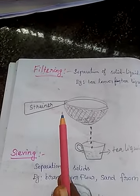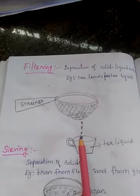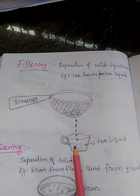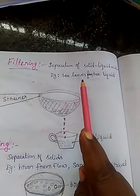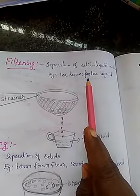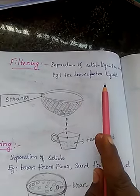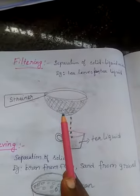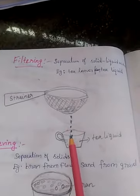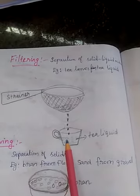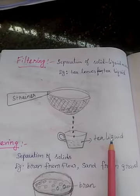The strainer is used to filter large-size particles and we get clear, pure liquid. For example, tea leaves are separated from tea liquid. The tea leaves are filled in the strainer and we get pure tea liquid.